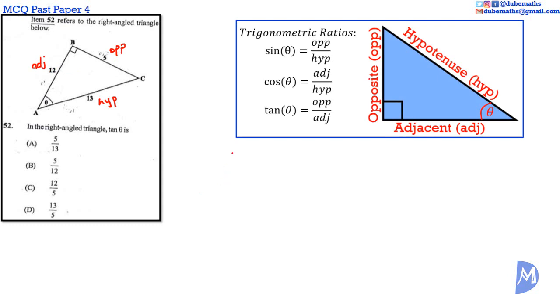The tangent ratio is tan theta equals opposite over adjacent. Therefore, tan theta equals 5 over 12. The answer is B.